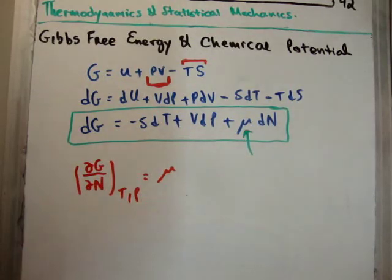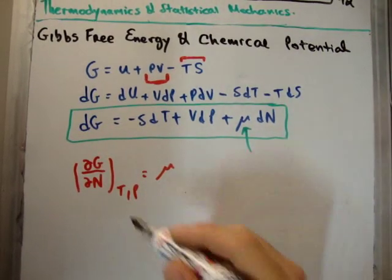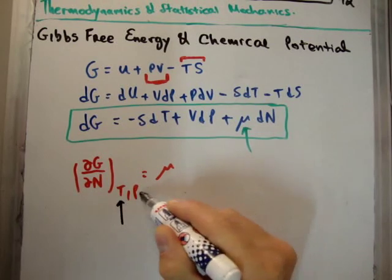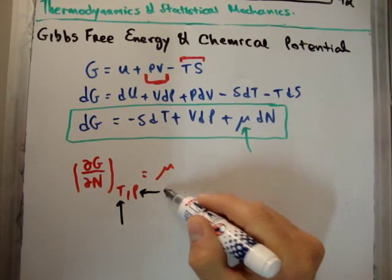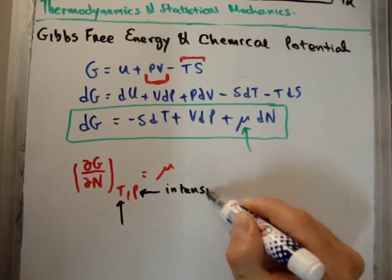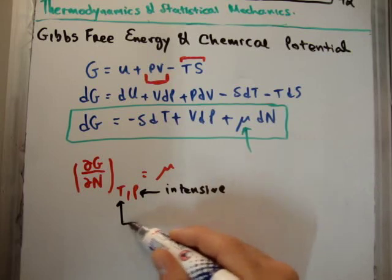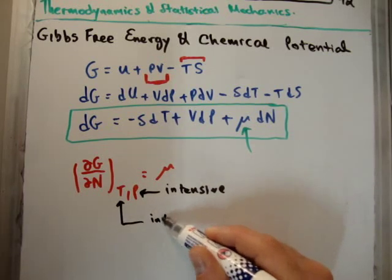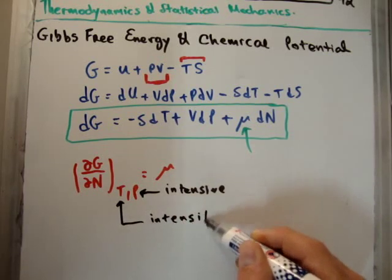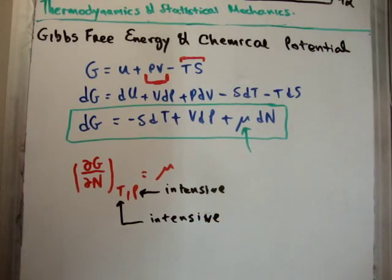But if we look here, we find that both the variables which we're holding fixed, and this particular partial derivative are intensive. So both of these do not double when we double the number of particles. They're both intensive.